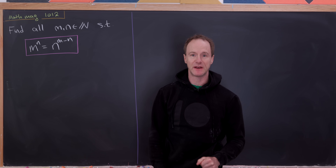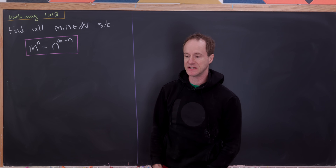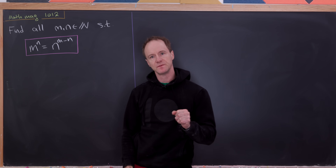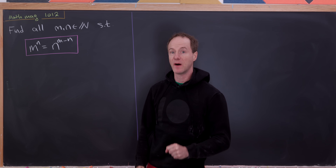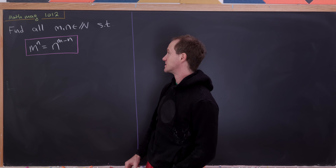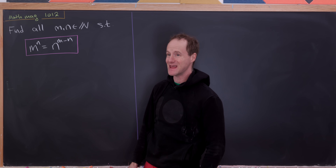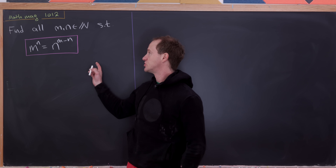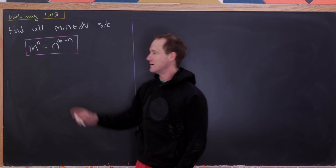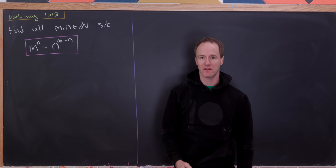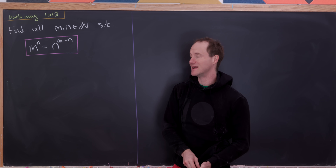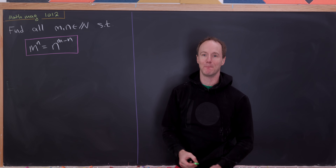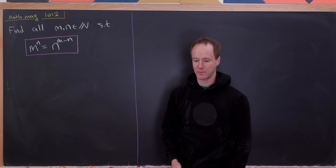Today we're going to look at a nice exponential Diophantine equation. Our goal is to find all positive integers m and n so that m to the nth power is equal to n to the m minus nth power.